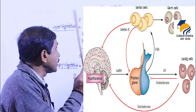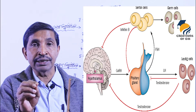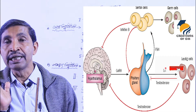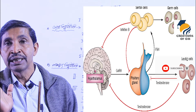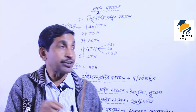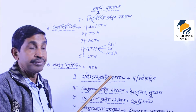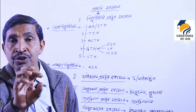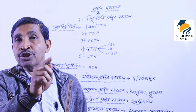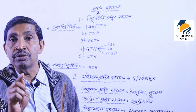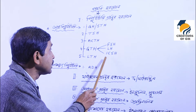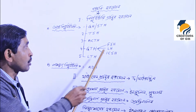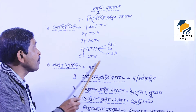The third is ICSH — interstitial cell stimulating hormone. In the male testis, there are special cells called Leydig cells (interstitial cells of Leydig). ICSH stimulates these interstitial cells to perform hormone secretion activity in the testis — specifically to control testosterone hormone secretion.